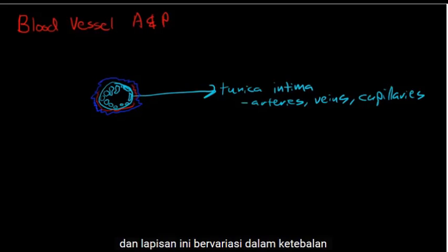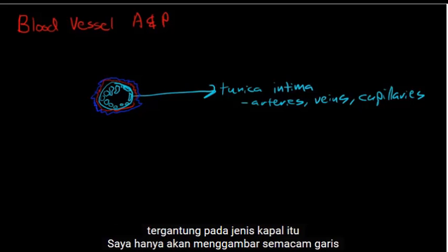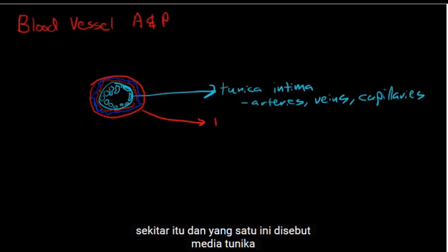Beyond that we have a layer of elastic tissue and smooth muscle, and this layer varies in thickness depending on what type of vessel it is. This layer is called the tunica media.